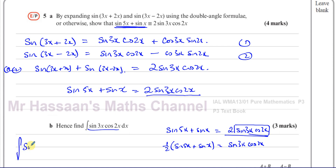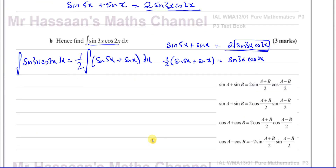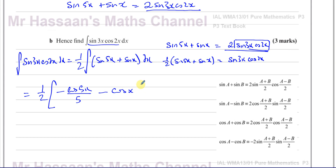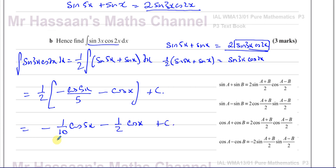This is something I can easily integrate. I get one half times: integrating sine(5x) gives −cosine(5x)/5, and integrating sine(x) gives −cosine(x)/1, plus c. So the answer is −(1/10)cosine(5x) − (1/2)cosine(x) + c. And that's the answer to part b.